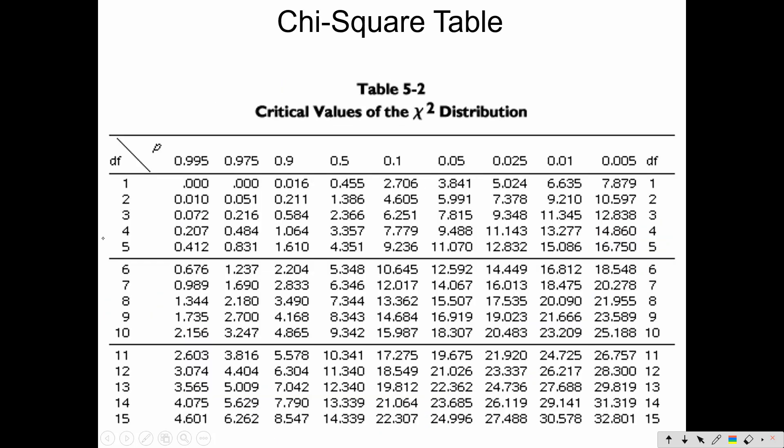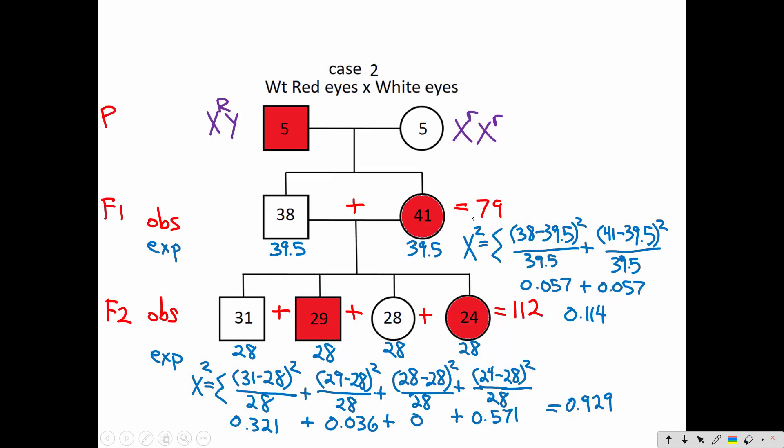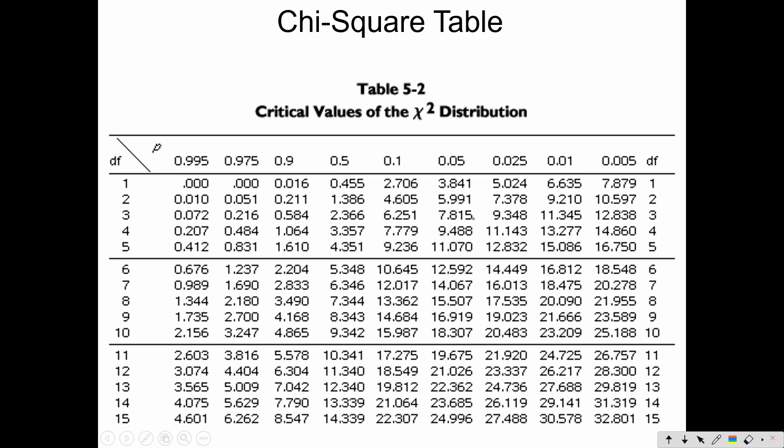This time I have three degrees of freedom. Again, my .05 confidence. 7.815 is my critical value. 0.929 is way less than 7.815. So I fail to reject my hypothesis.